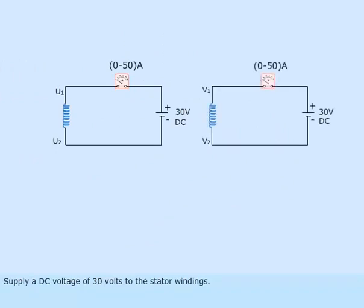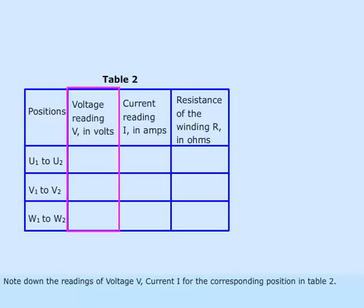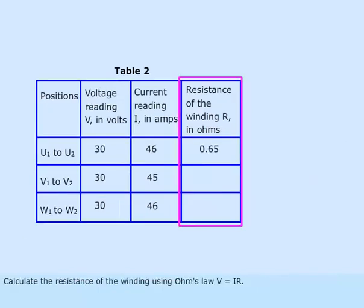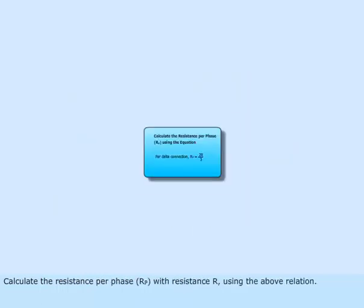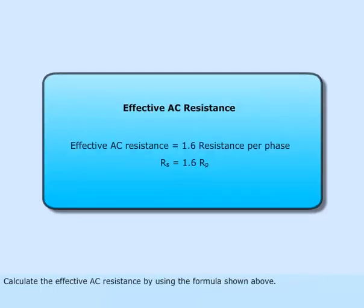Supply a DC voltage of 30 volts to the stator windings. Note down the readings of voltage V and current I for the corresponding position in table 2. Calculate the resistance of the winding using Ohm's law V = IR. Calculate the resistance per phase RP using the above relation, then calculate the effective AC resistance using the formula shown above.